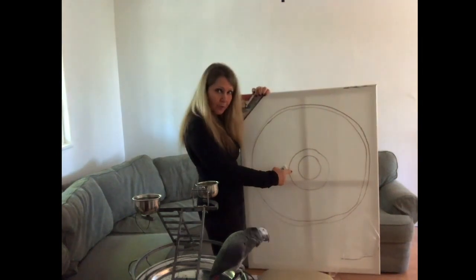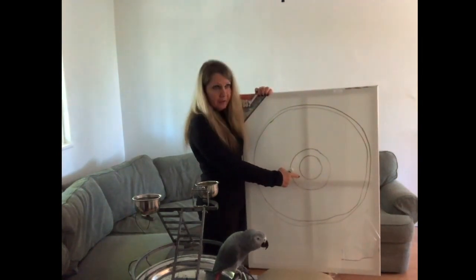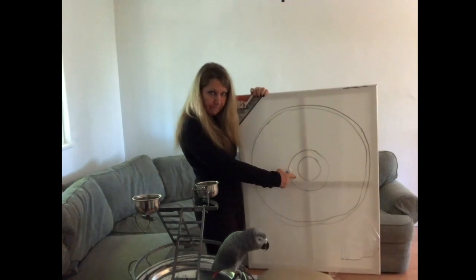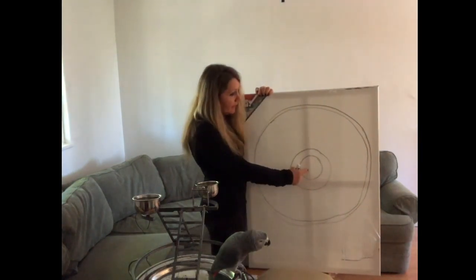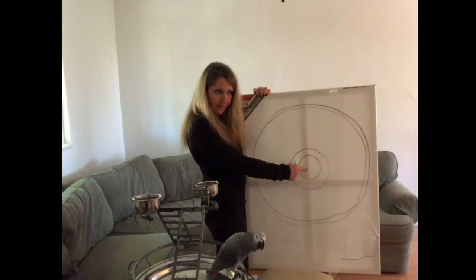Then we have the outer core, which is liquid. It's melted metals, iron, right? And then the inner core is a solid iron and nickel.